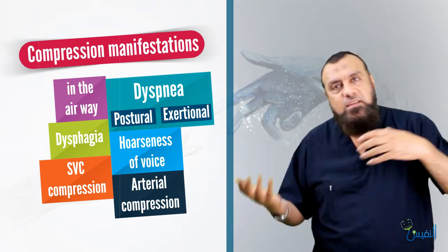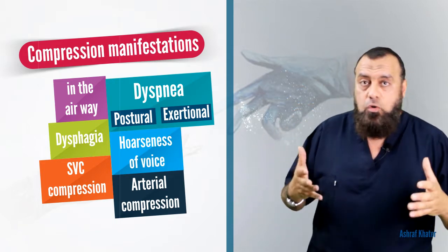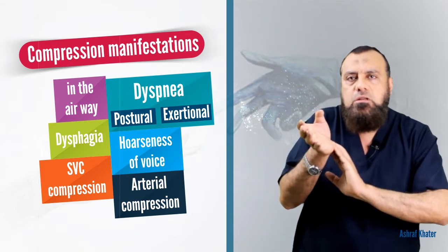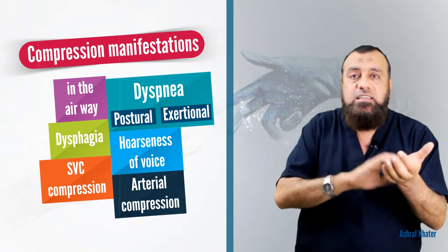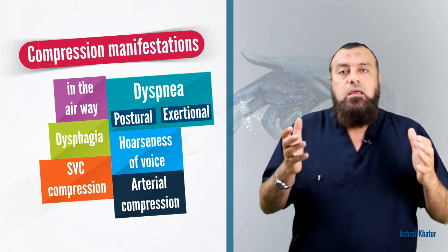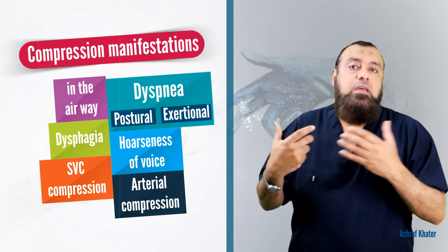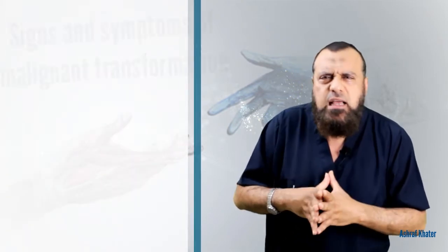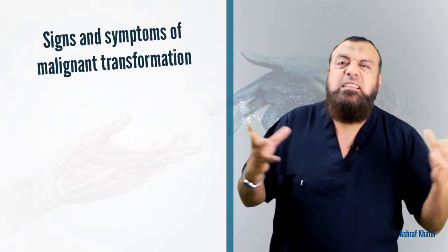Lastly, compression on the arteries may result in dizziness and pulse inequality on both sides. In a case of thyroid disorder, you must measure the pulse on both sides to check for equality. If there is compression on one side, it may lead to unequal pulses. These are the compression manifestations.